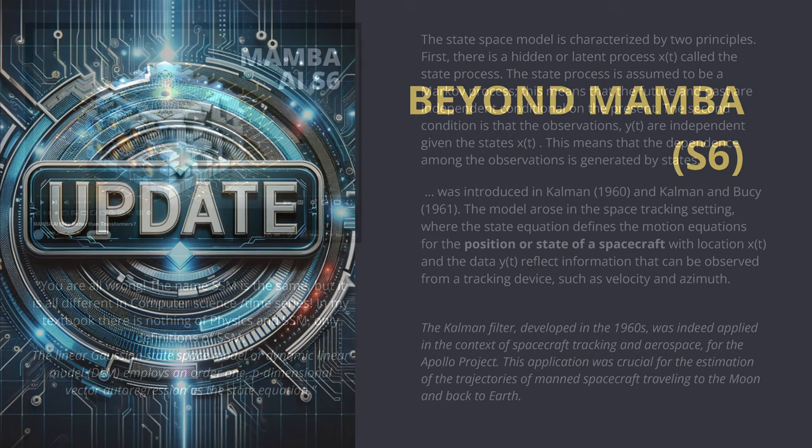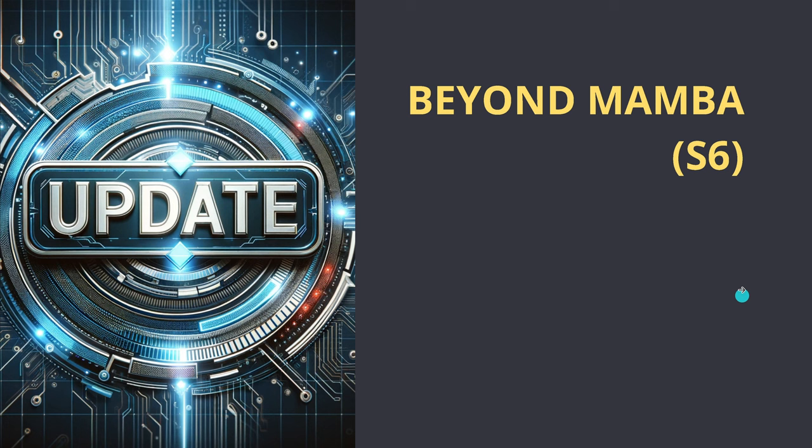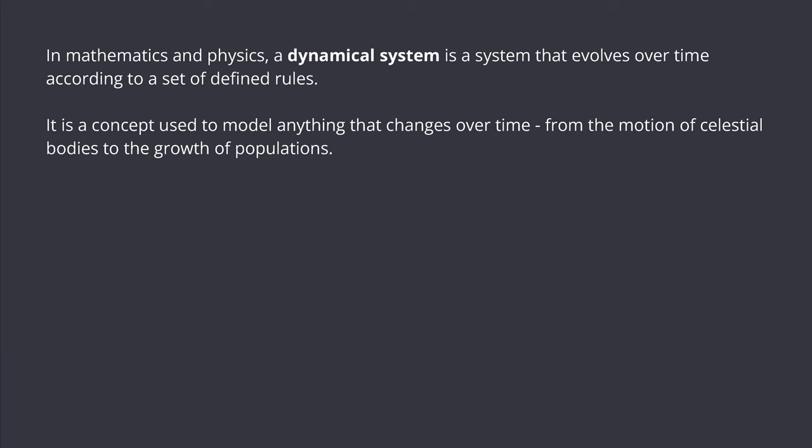So now, update — we go beyond Mamba. Please fasten your silver seatbelts, because here we go. Mathematics, physics — a dynamical system is a system that evolves over time according to a very free set of rules. This is a concept used in anything that changes over time: the motion of our celestial bodies, from the Apollo spacecraft to the growth of population.